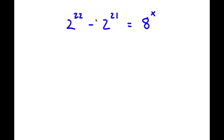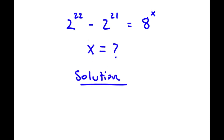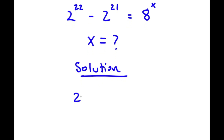In this problem, I have 2 to the power of 22 minus 2 to the power of 21 is equal to 8 to the power of x. At first glance this problem looks pretty complicated, however it's actually easier than you might think. I'm solving for the value of x, so I start with 2 to the power of 22 minus 2 to the power of 21 is equal to 8 to the power of x.